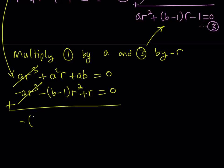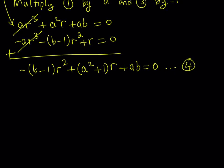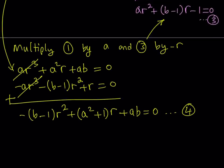Let's write it this way: negative (B minus one) times R squared, plus (A squared plus one) times R, plus AB equals zero. Let's call this equation number four. So far I have four equations, which makes it easier to keep track of what we're doing. Now if you look at equation number three and number four, something should get your attention.